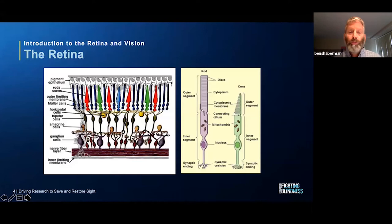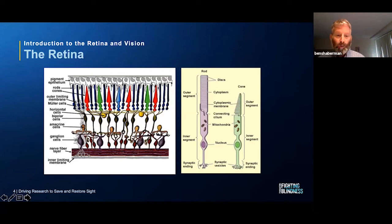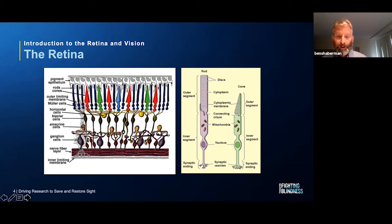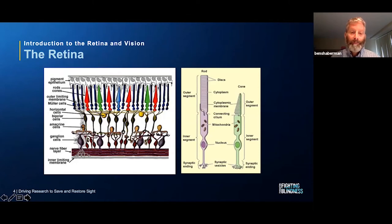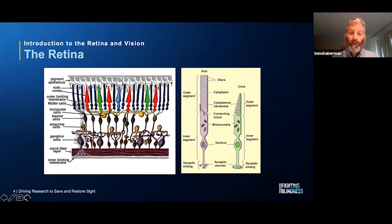On this slide, I have two diagrams. On the left is a side view of the retina, obviously blown up considerably. On the right, I have diagrams of a rod and a cone. In this side view, the cells we're usually most interested in are the photoreceptors — the vertically oriented cells toward the top of the diagram. There are two types of photoreceptors: rods and cones. The cones are cone-shaped and shown in red, green, and blue. Cones are important for giving us the ability to perceive details, colors, and to see in lighted settings. They're concentrated in the center of the retina, making them important for central vision.